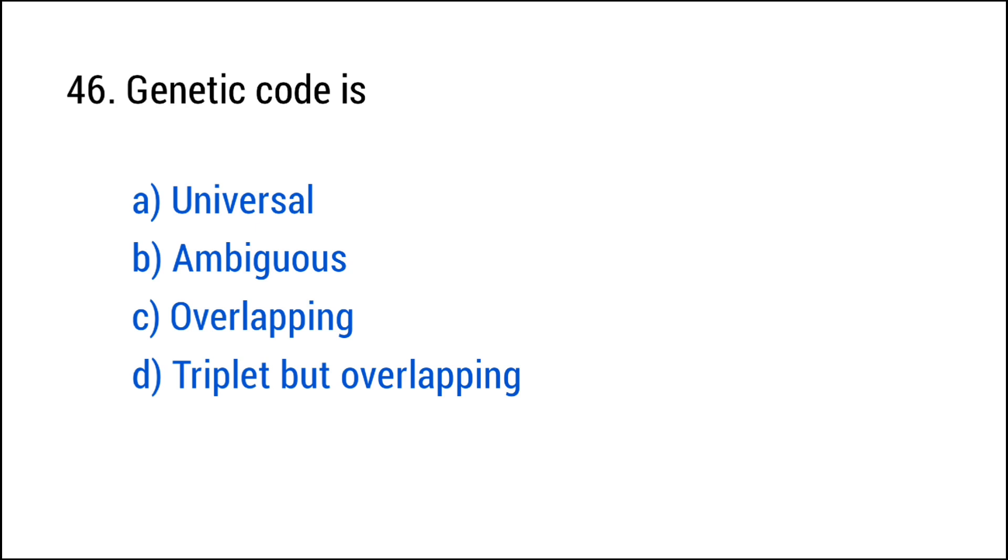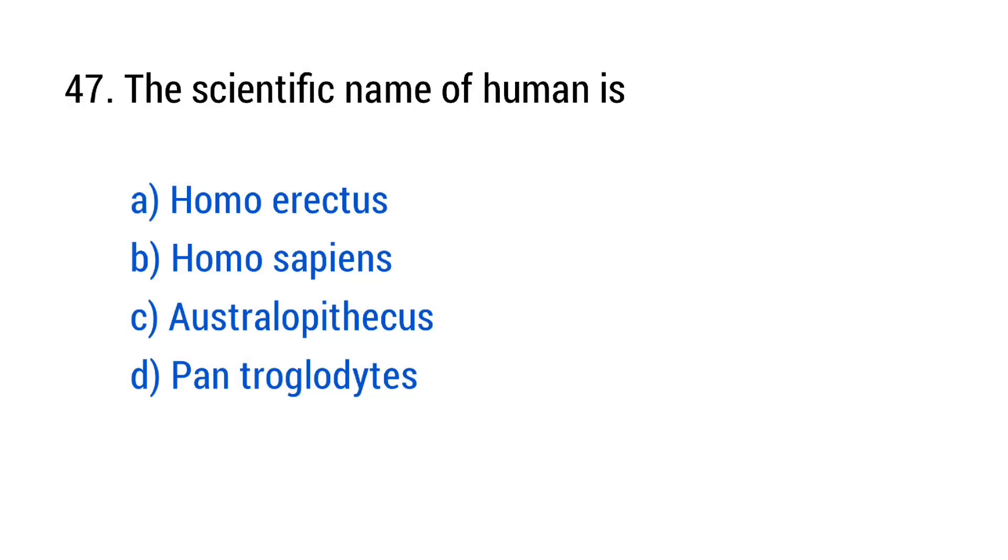Question number 46. The universal donor blood type is? The right answer is option A, O. Question number 47. The scientific name of human is? The right answer is option B, Homo sapiens.